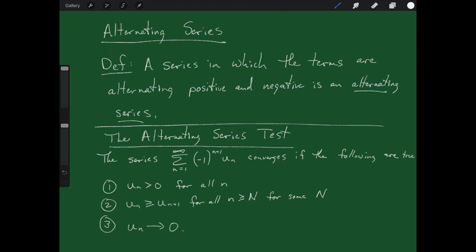Welcome back. Today I'd like to talk to you about alternating series, so let's dive right in with a definition. A series in which the terms are alternating positive and negative is an alternating series. Everything we've been dealing with so far in this course in terms of infinite series has had all positive numbers — the root test, ratio test, comparison test, limit comparison test. Now we're starting to talk about what if some terms are negative, and the simplest situation is an alternating series, where it flip-flops.